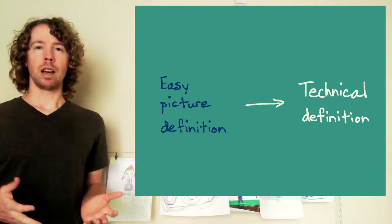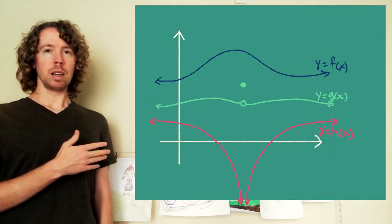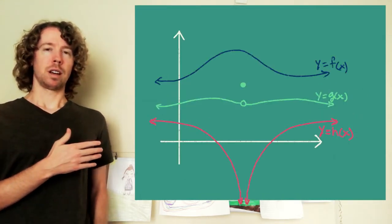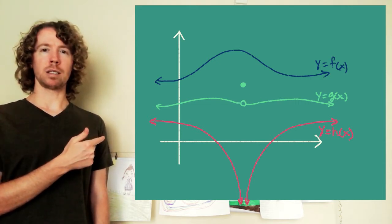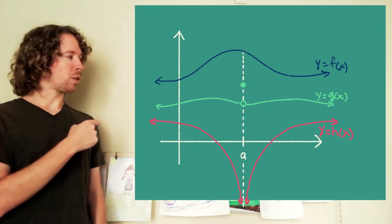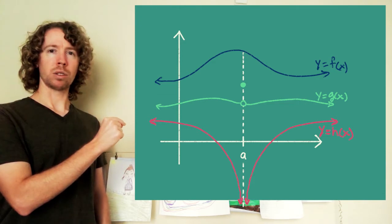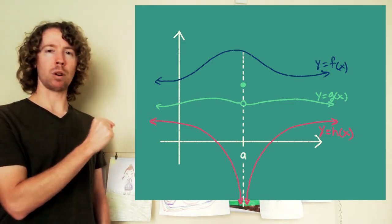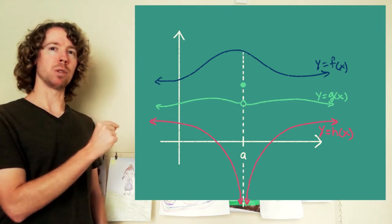The idea is, if you've got a graph of a function, I'll give you three different graphs here. If you've got a graph of a function and let's pick a specific x value to look at, let's say x equals a, then if the graph is smooth at a, so there are no breaks in the graph, no holes, no jumps, then we'll say that the graph is continuous there.